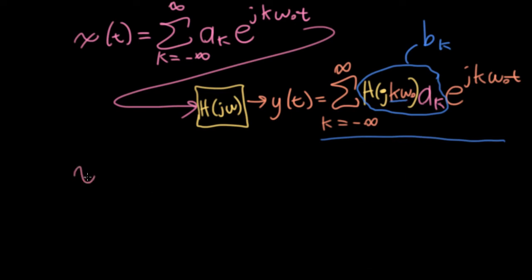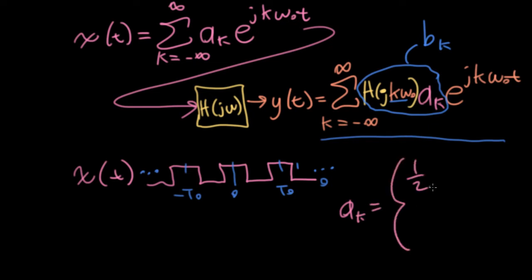All right, so let's do an example. We need a function to go in. Let's use the square wave that we computed the Fourier series coefficients for last time. The particular square wave we computed those coefficients for went from zero to one and was centered at zero. So the Fourier series coefficients for this were one half for the special case of k equals zero and sin(kπ/2) divided by πk for all of the other k. So a consequence of this formula is that all of the even harmonics are missing except, of course, for the DC value of k equals zero. All right, so that's our signal that's going in to the system.